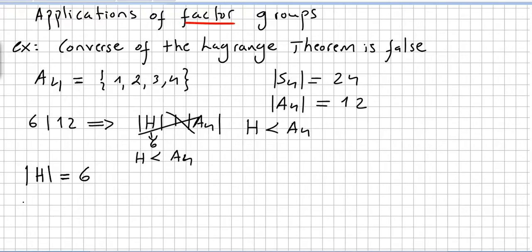In order to get a contradiction, so we will get a contradiction, let us suppose that A4 has a subgroup of order 6. So H would be a normal subgroup of A4.